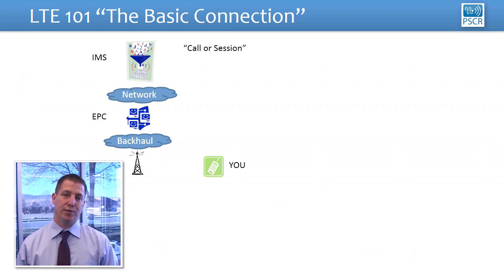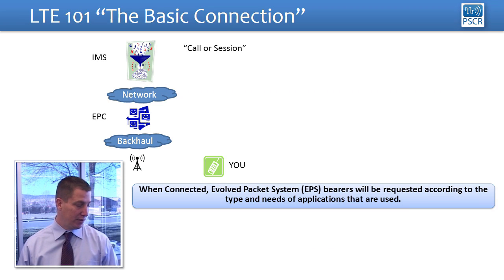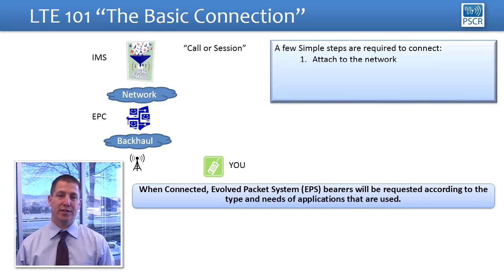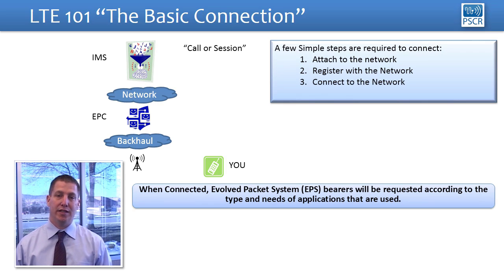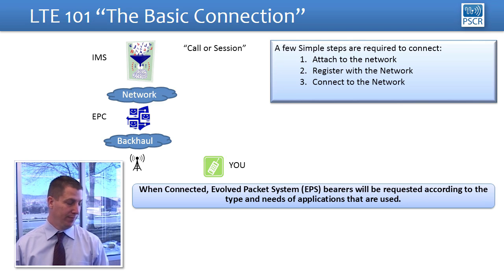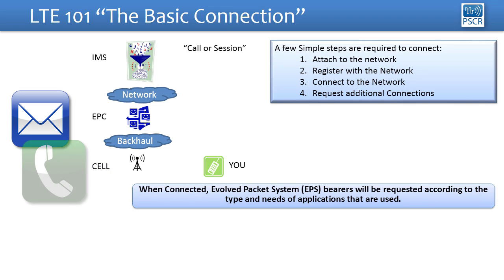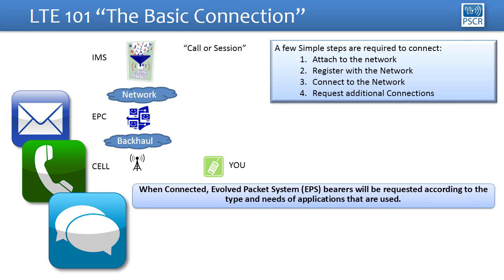Once you move beyond the cell, it's really important to know about your device and how it connects to the network. There are just a few steps required. The first thing when you turn on your phone is it attaches to the network — it basically says, 'I'm here, I want to register and be able to use service when it's available.' Once it's registered, it will connect to the network and you can establish data connections to use your applications and get available services. Lastly, it will request additional data connections, so if you want to do multiple things in parallel, you're able to launch different applications, make voice calls, answer text messages while in voice calls, and more.